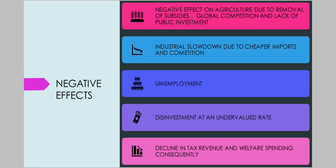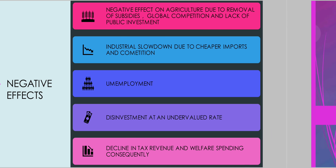Though we reduced the tax rate and also simplified the procedure, there was a decline in tax revenue and welfare spending as a result. But overall, we can say that NEP 1991 changed the way Indian economy thinks. If Indian economy takes the right steps to rectify these problems, then we can go ahead and be a superpower very soon. Thank you and have a good day.